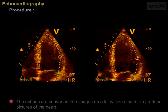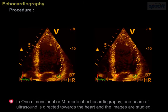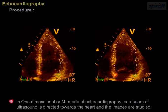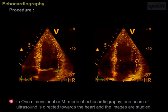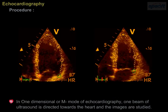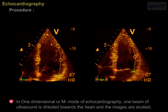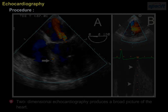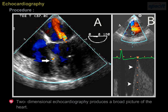In one-dimensional, or M-mode echocardiography, one beam of ultrasound is directed towards the heart and the images are studied. Two-dimensional echocardiography produces a broad picture of the heart.